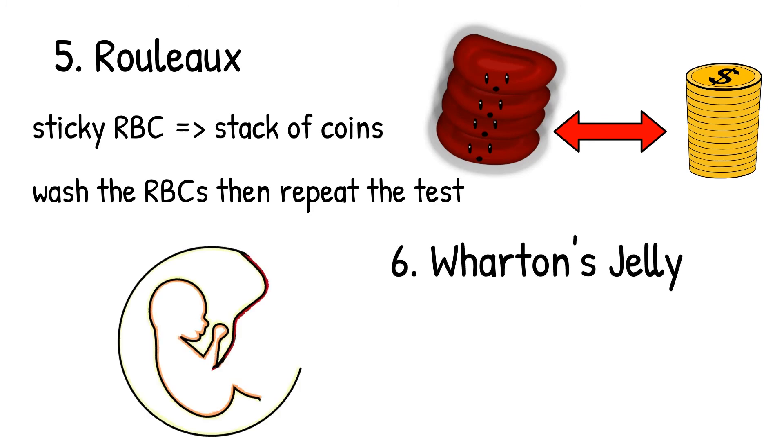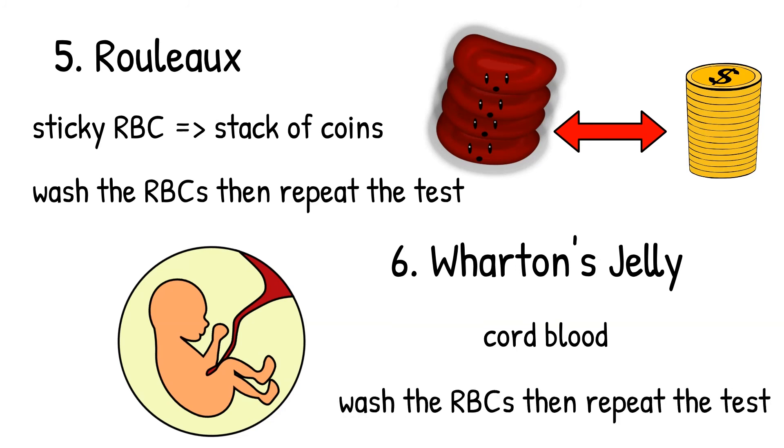Six, Wharton's jelly. Wharton's jelly comes from connective tissues and can be found in cord blood. So when we perform ABO typing using cord blood, we should wash the cell first to avoid interference from Wharton's jelly. Wharton's jelly cause false positive. Besides washing the red blood cells before performing the test, we can also request for a heel stick.